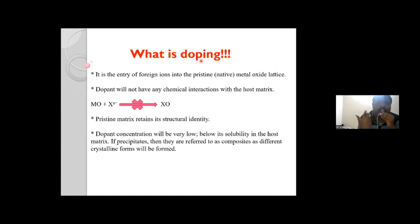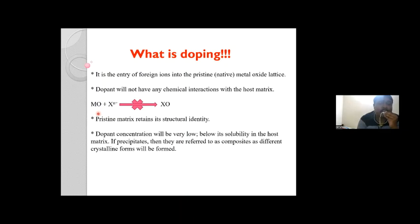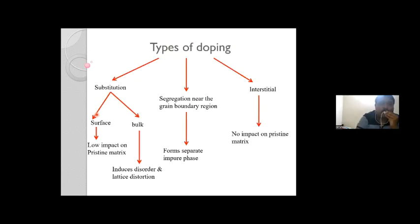Doping is an entry of impurity or foreign ions — whether a cation or anion — into the host lattice of a semiconductor. A basic requirement is that the dopant should not have any chemical interactions; if it does, the host matrix loses its structural identity and we call it a composite. There is a certain concentration level at which a dopant can enter the host matrix.